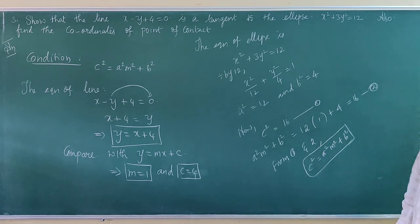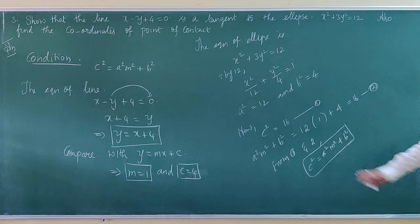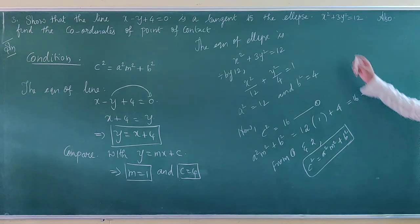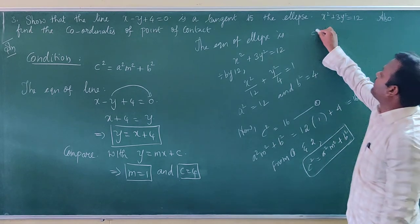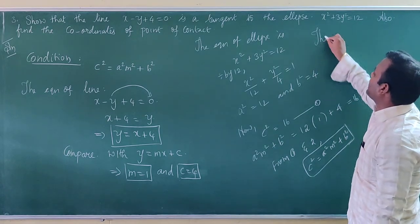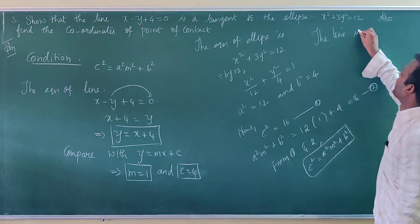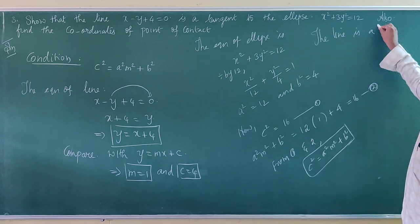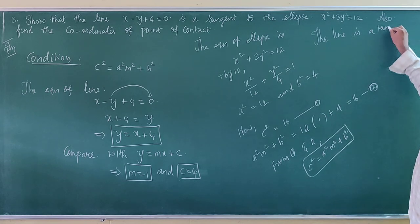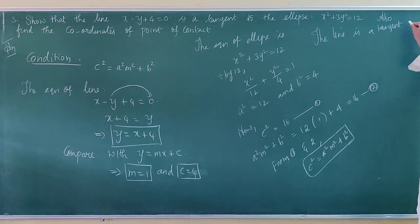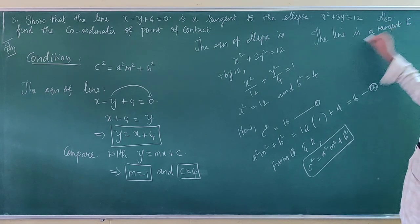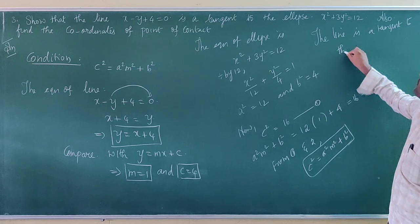From equations 1 and 2, we can say that c squared is equal to a squared m squared plus b squared. The condition is satisfied. Since the condition is satisfied, we can conclude that the line is a tangent to the ellipse.